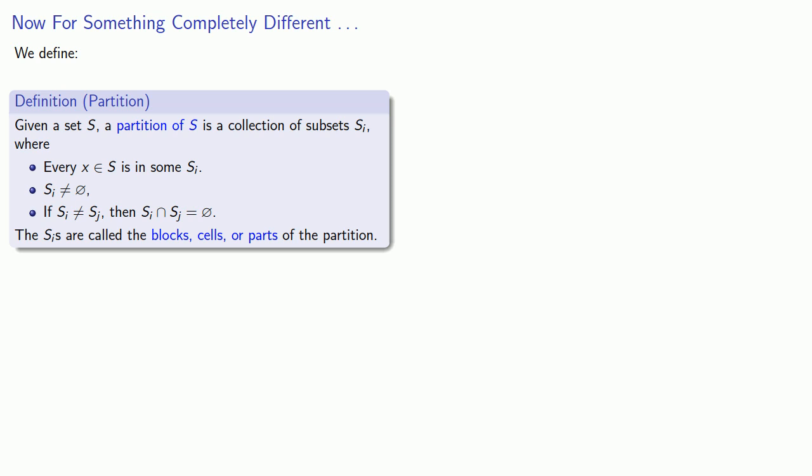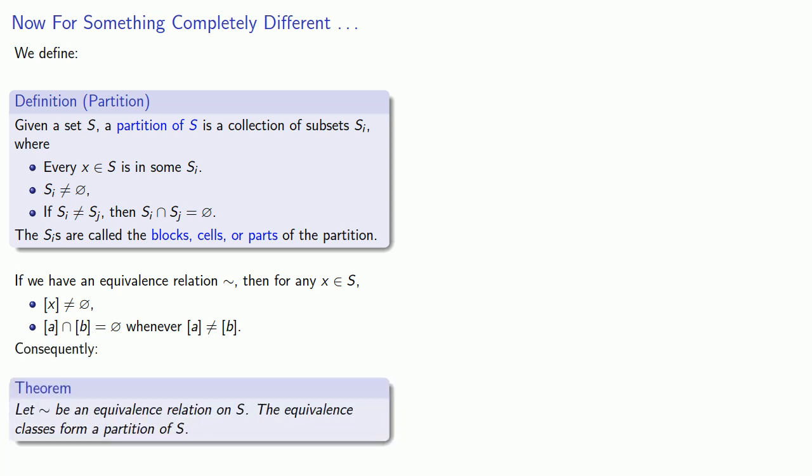What does this have to do with equivalence relations? Well, if we have an equivalence relation, then for any x in our set, we've shown the equivalence class of x is not the empty set. There is at least one element in that set, and the intersection of two equivalence classes is the empty set whenever the two equivalence classes are not actually the same class. Consequently, let squiggle be an equivalence relation on our set. The equivalence classes form a partition of our set.